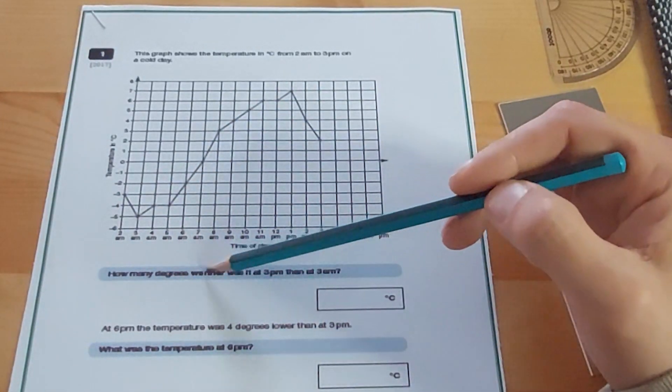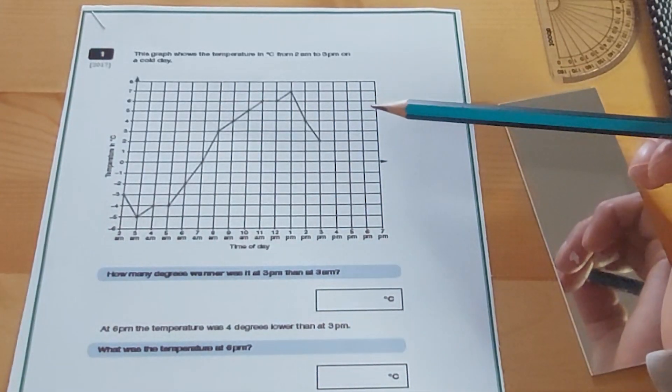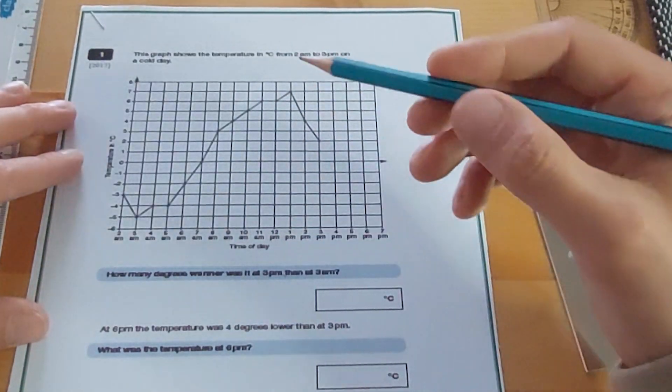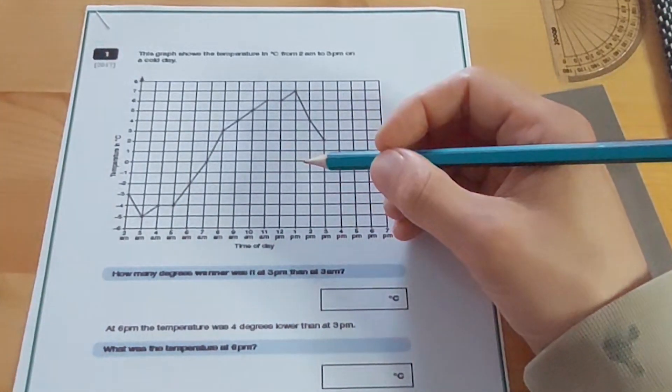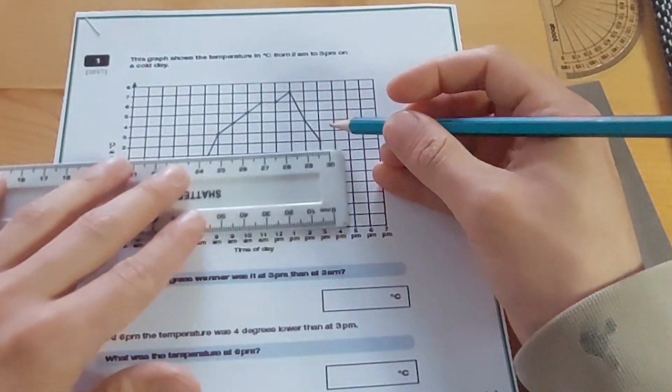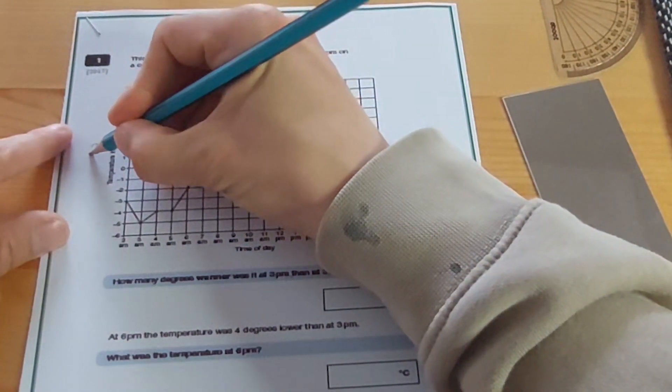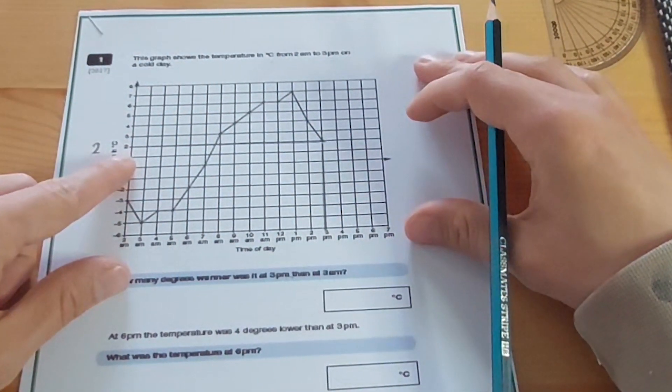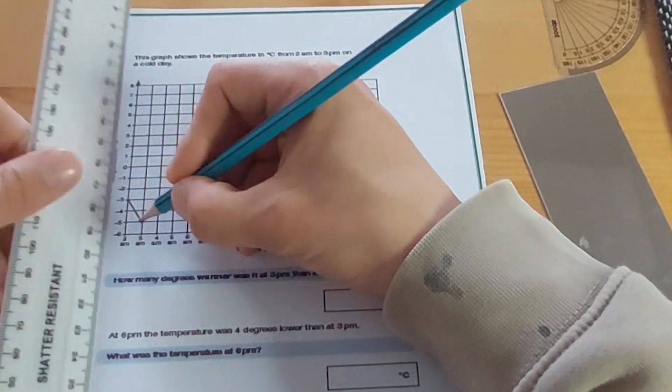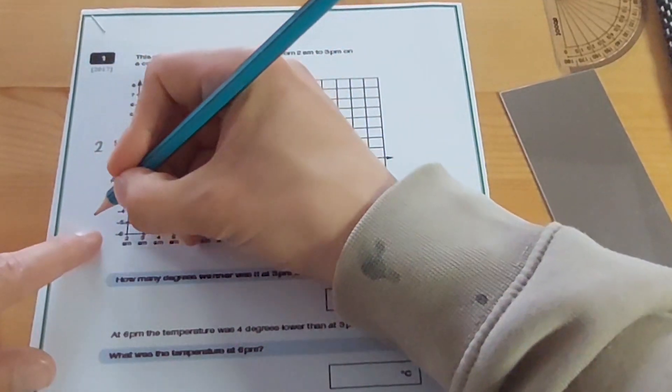The first question says, how many degrees warmer was it at 3pm than at 3am? You often get questions just like this where it's asking you to find the difference between those two numbers. The first thing I would suggest doing is look at what the temperature was at 3pm. Let's use our ruler to help us. 3pm is right here at the end. I'm just going to draw a line there. Then from that line, I'm going to go across so I can get the exact temperature. Looking at it here, it looks like the temperature was 2 degrees. What about 3am? 3am is here at the start. Let's have a look. We're going to go up here and across. At 3am it was minus 5.